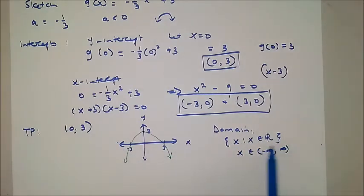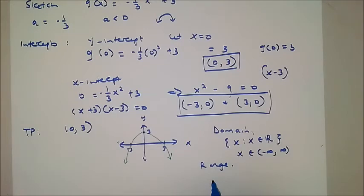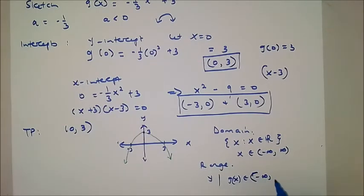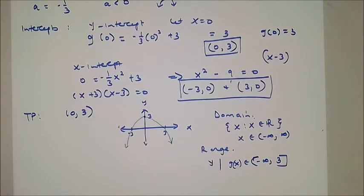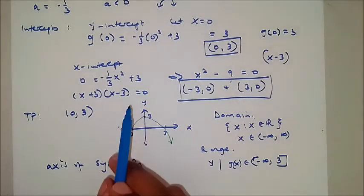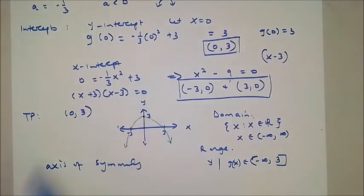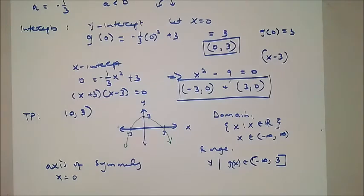The range: the function exists at y values negative 1, negative 2, negative 3, 1, 2, 3, but at y equal to 4 the function does not exist. So the range is g of x, an element from negative infinity until 3 — you include 3 because that is where the turning point is. The axis of symmetry is the y-axis, so x equals 0, dividing the graph into two equal halves.